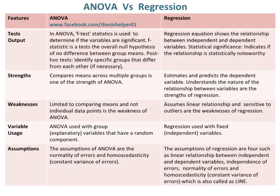In ANOVA, the F-test statistic is used to determine if the variables are significant. The F-statistic tests the overall null hypothesis of no difference between group means. Post-hoc tests identify specific groups that differ from each other, if necessary. Whereas, in regression, the regression equation shows the relationship between independent and dependent variables, and statistical significance indicates if the relationship is statistically noteworthy.